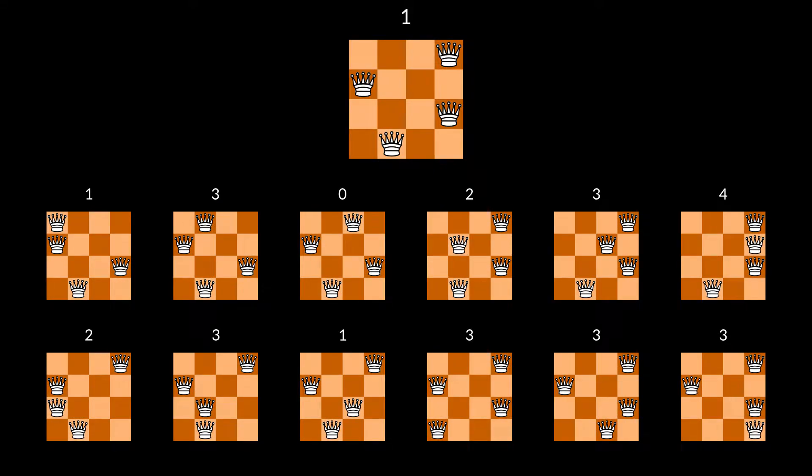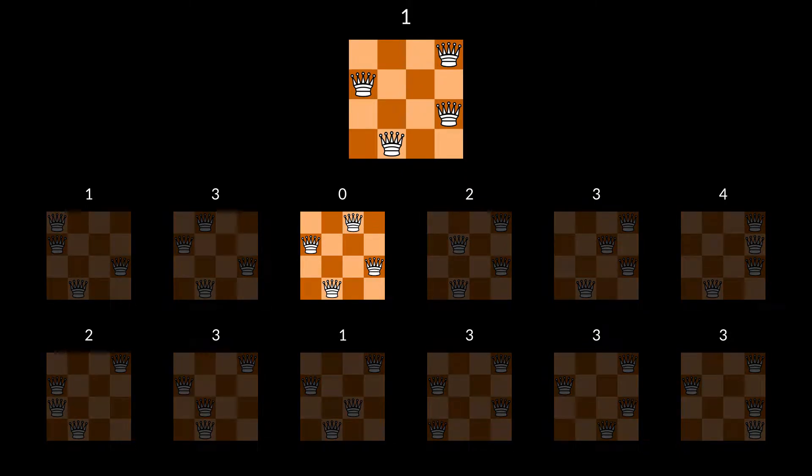That was one step of the algorithm. Now we try to improve the new state in the exact same way, and repeat until we hopefully find one with zero conflicts. In our example, we can reach this solution state by moving the top queen one column to the left.